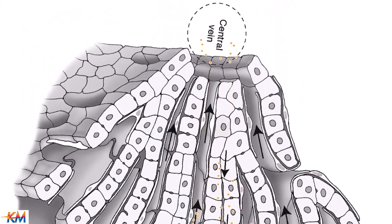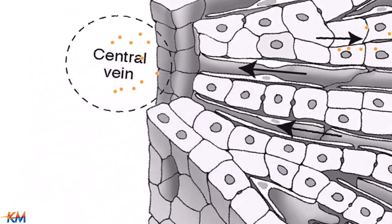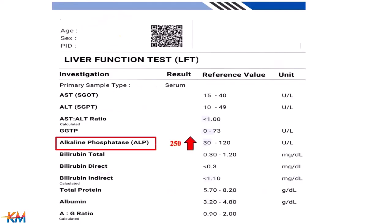Then it circulates to central vein and to general circulation, resulting in increased alkaline phosphatase level over normal value. Therefore, alkaline phosphatase is taken as indicator for biliary tract obstruction and cholestasis.